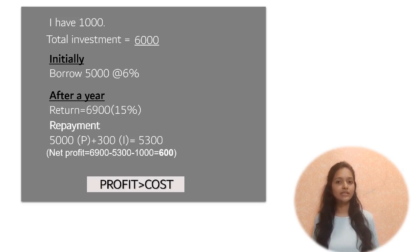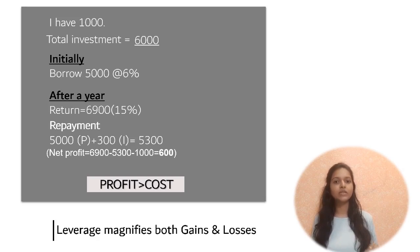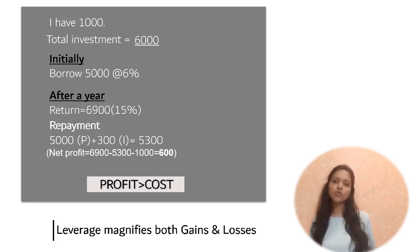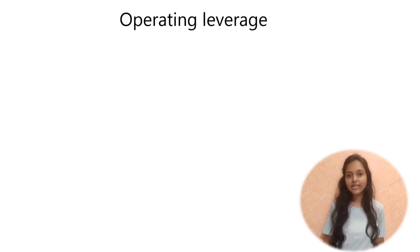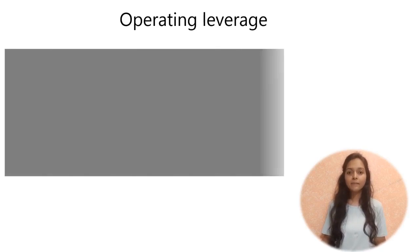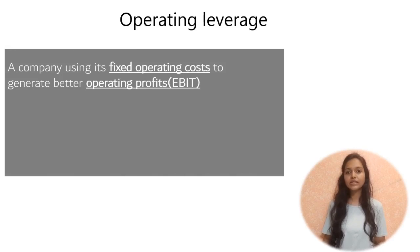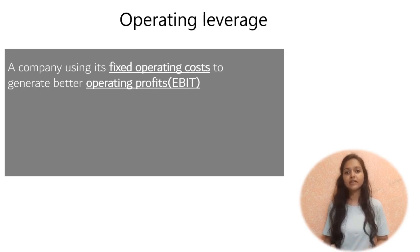Because the profits are more than the cost, leverage has generated a positive outcome. But if returns were less than the cost, using leverage would have been riskier. So we understand that leverage magnifies both gains as well as losses. Now moving to our actual topic — operating and financial leverage — starting first with operating leverage. Operating leverage means how efficiently a company is using its fixed operating costs to generate better operating profits.